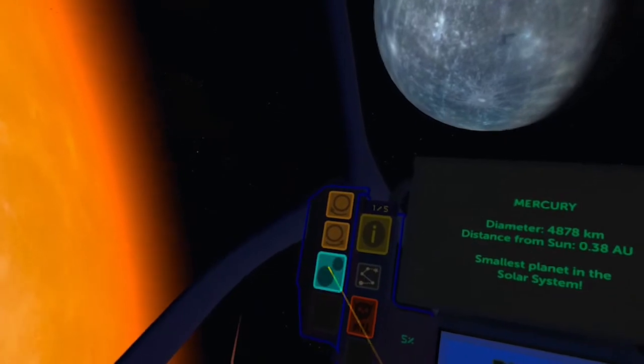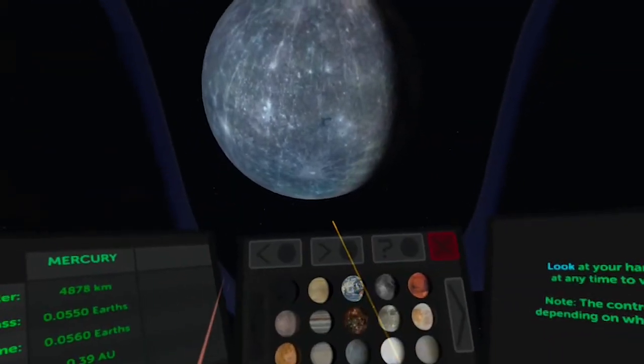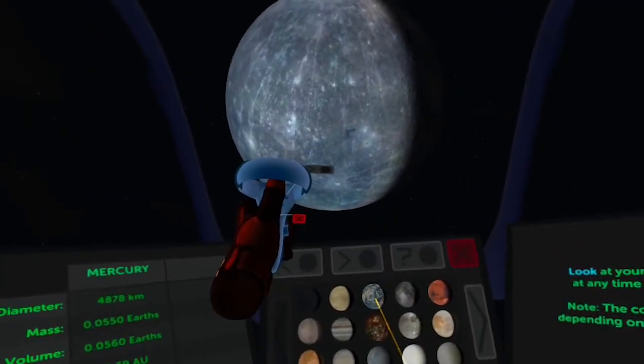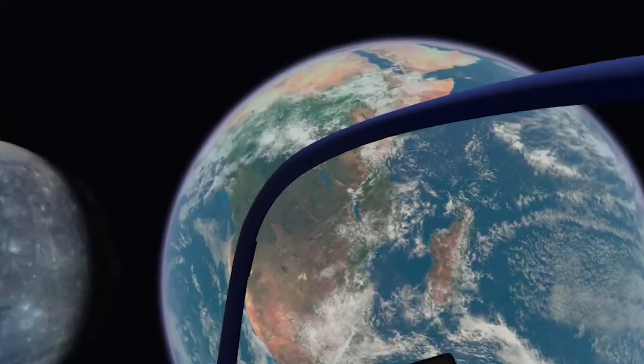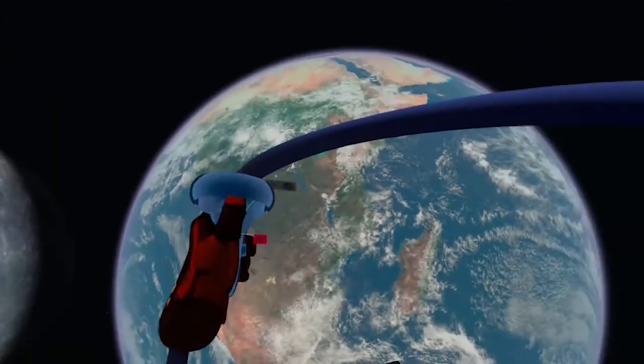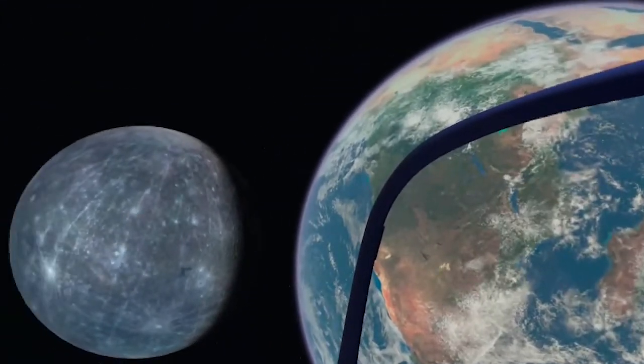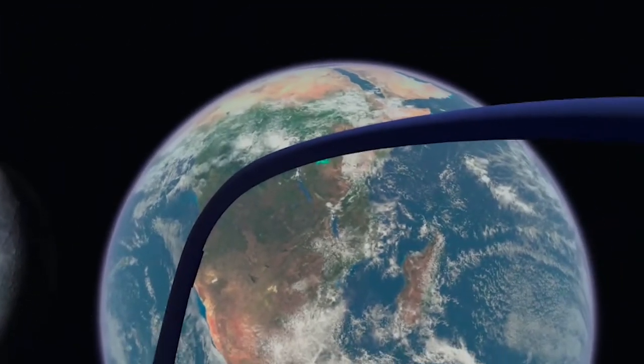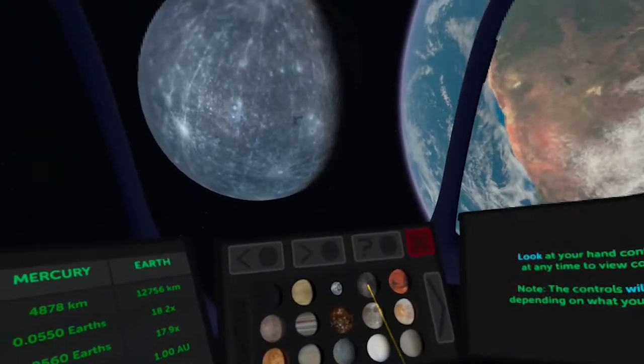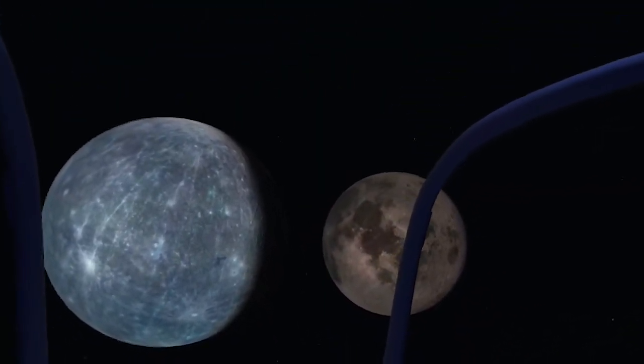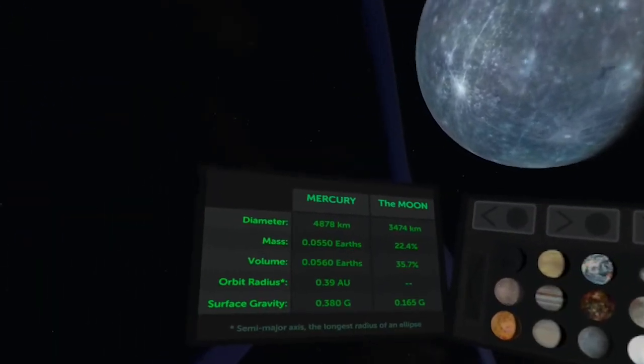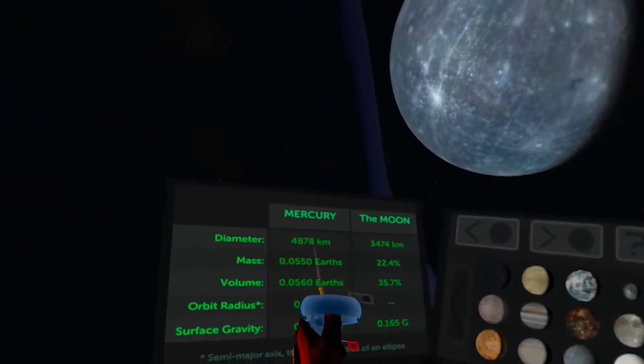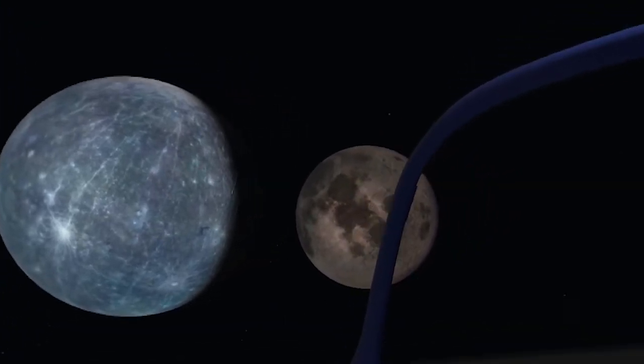One of the great things about this program is it lets you compare the size of things. So that's Mercury, I'm going to put it next to the Earth. So now you can see the relative sizes there. There's Mercury and here's the Earth. Mercury is significantly smaller than the Earth. Now let me put it next to the Moon. It's a little bit bigger than the Moon, but not by a whole lot, relatively close in size there.